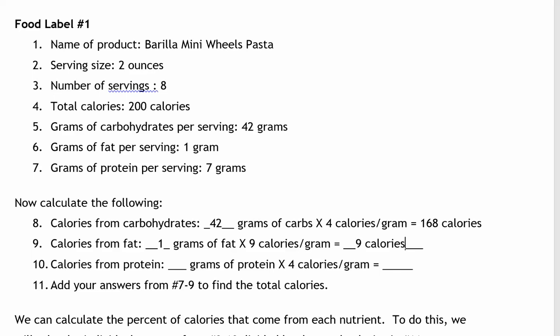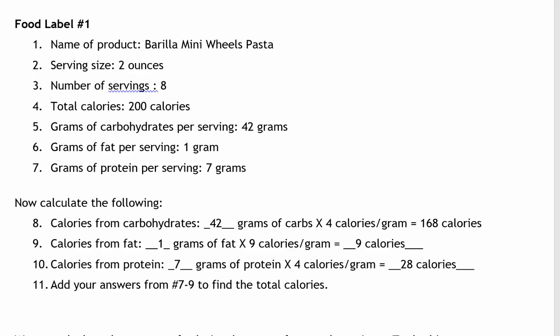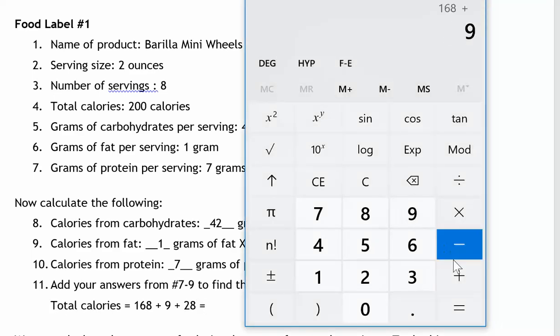And finally, we're going to find the calories from protein. Let's look at the number of grams of protein. In number seven, we found that there were seven grams of protein per serving. So seven grams of protein times four calories per gram. Use your calculator if you need to. Seven times four is 28. That means there are 28 calories in this meal from protein. To find the total calories, number 11 says add the answers from number seven through nine to find the total calories. So total calories is going to equal 168 plus nine plus 28. So 168 plus nine plus 28 gives us 205 calories.